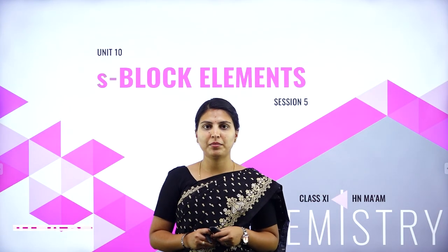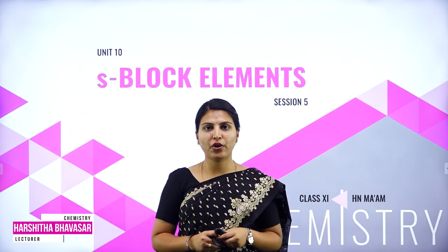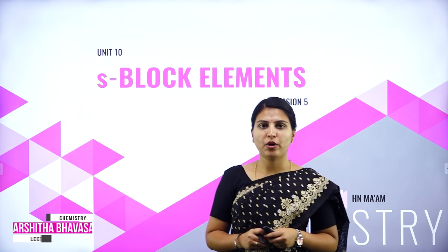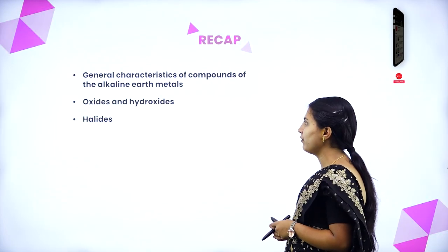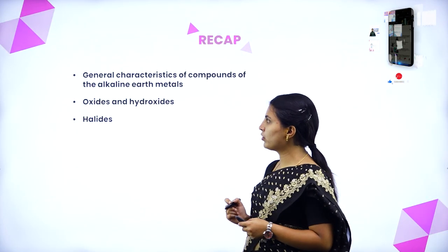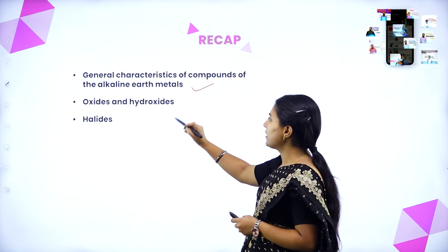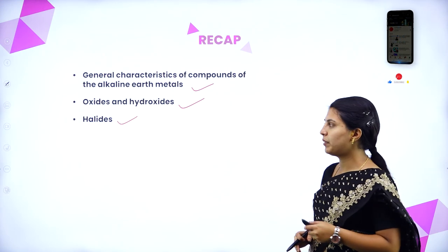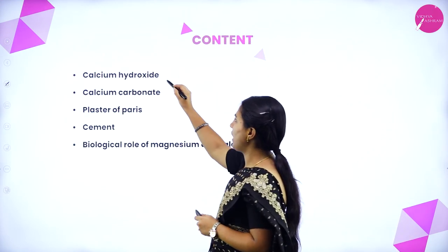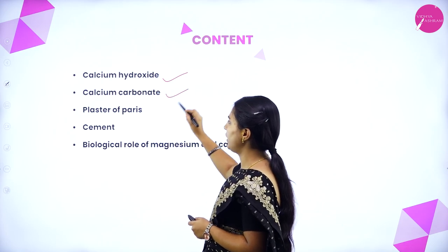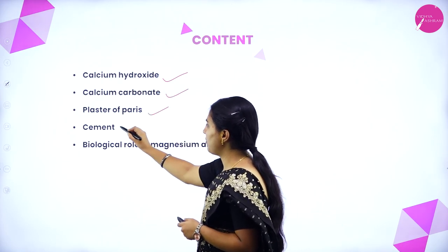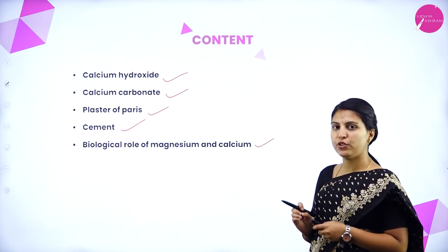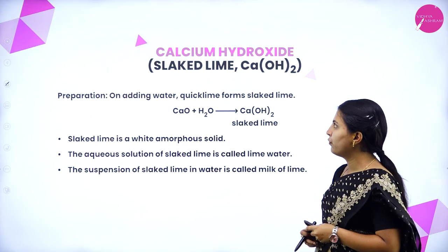Hello everyone, this is Harshita Bhavasar from Vidyashram School of Excellence. Today we are starting session 5 from the chapter S-Block Elements. In the last session we discussed general characteristics of compounds of the alkaline earth metals, oxides and hydroxides, and halides. In this session we will discuss calcium hydroxide, calcium carbonate, plaster of Paris, cement, and the biological role of magnesium and calcium.